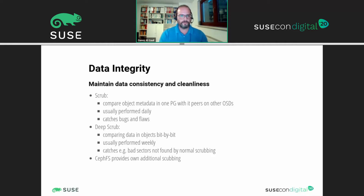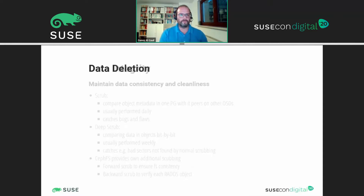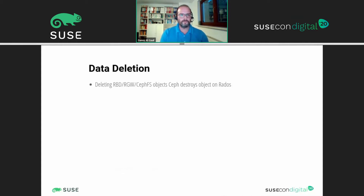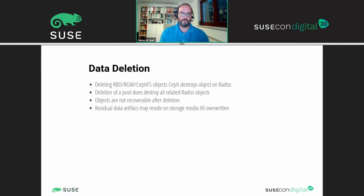CephFS itself provides additional scrubbing. One is forward scrubbing, which ensures file system consistency, and backward scrubbing verifies each RADOS object in the process. On data deletion, it's important to know that if you delete an object in Ceph, independent of which backend, it is directly destroyed on RADOS at the underlying layer. However, there can be residual data artifacts depending on your storage that may remain until it's overwritten, so you could potentially recover something if it hasn't been overwritten — but it will be quite hard.